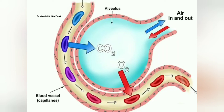Similarly, a carbon dioxide concentration gradient is also present. Carbon dioxide concentration in blood capillaries is high when compared to its concentration in the alveolus. So due to this concentration gradient, carbon dioxide molecules move from high concentration — from blood capillaries — to low concentration — into the alveolus. This is how the exchange of gases takes place between alveolus and blood capillaries.